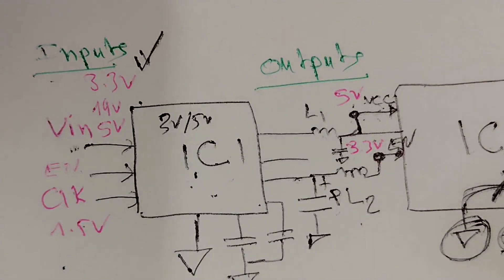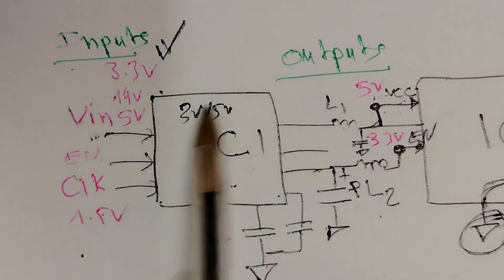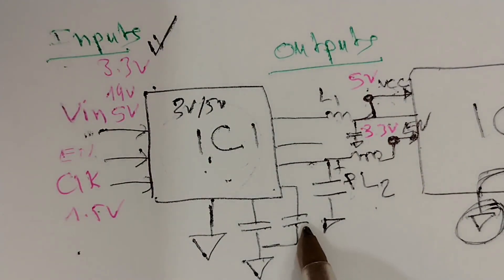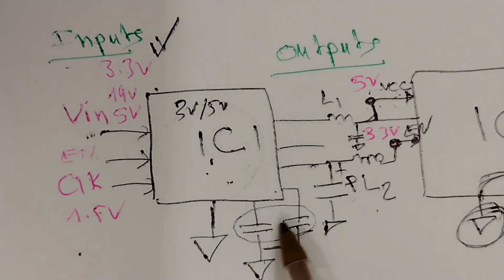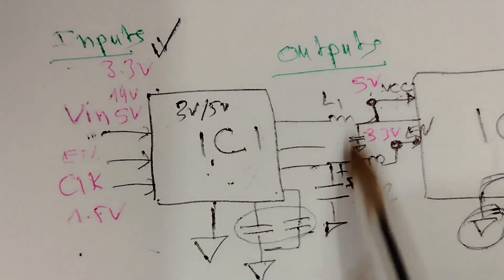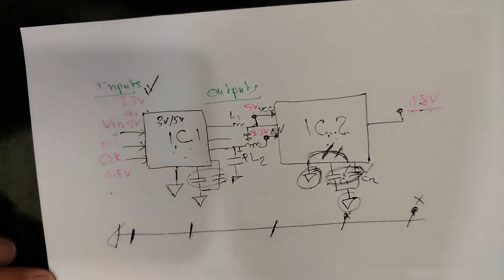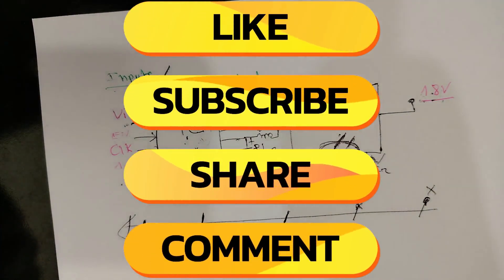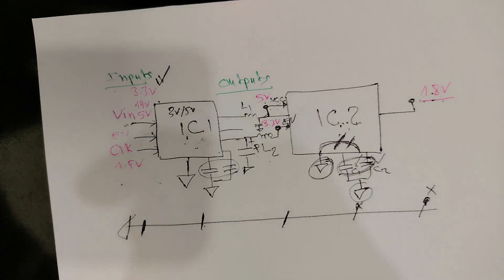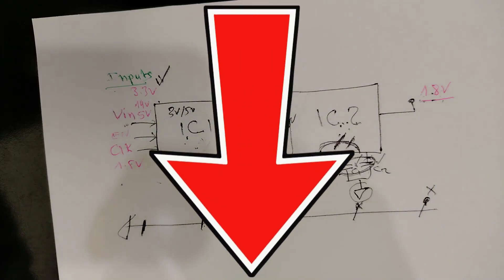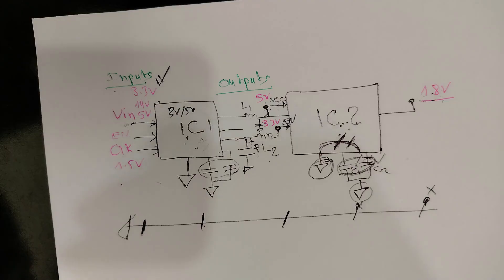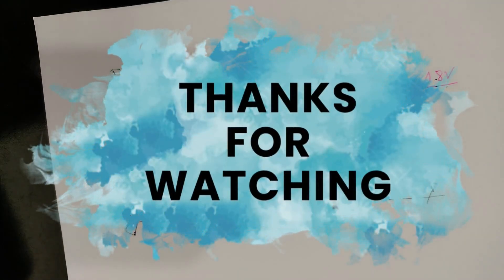You cannot test an IC like other components such as capacitors or resistors. You test the IC using three steps: using the datasheet to check inputs and outputs, checking the temperature of the IC with your finger, and checking the ceramic capacitors around the IC. If you find the same capacitors around the IC are all shorted, there's about a 90% chance the IC is the shorted component. Thank you very much — please like, subscribe, share, and join my Patreon page for more exclusive content.